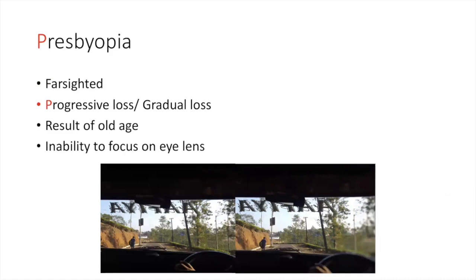Another refractive error is presbyopia, which is also farsighted — progressively or gradually, with the loss of muscle and lens elasticity. This usually occurs with someone who is 40 years and over, with an inability to focus the eye lens or refocus quickly to accommodate variations in distance.